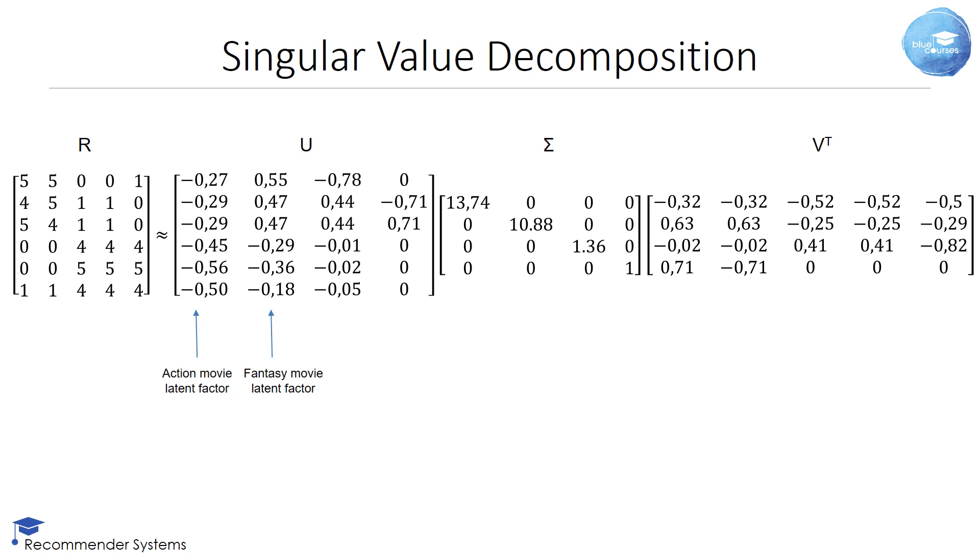Essentially, the matrix U can be interpreted as a user to latent factor similarity matrix. The singular value 13.74 represents the strength of the action movie latent factor concept, whereas the singular value 10.88 indicates the strength of the fantasy movie latent factor concept.